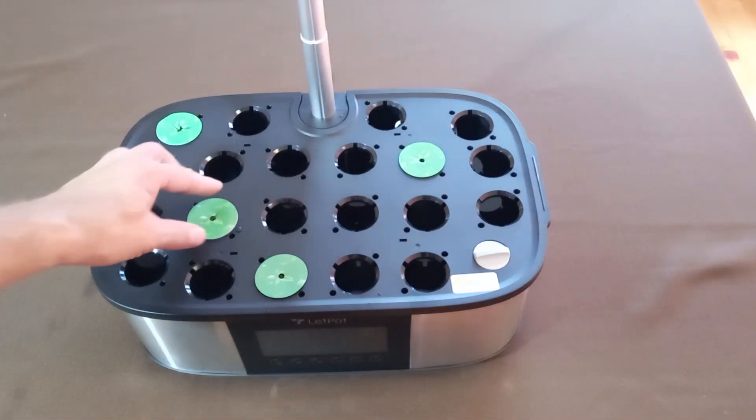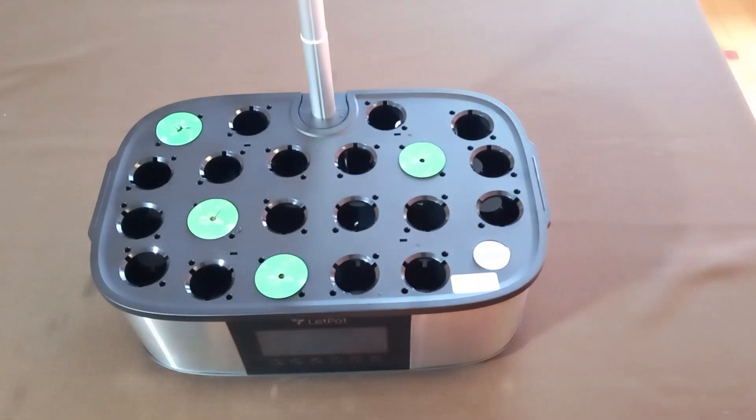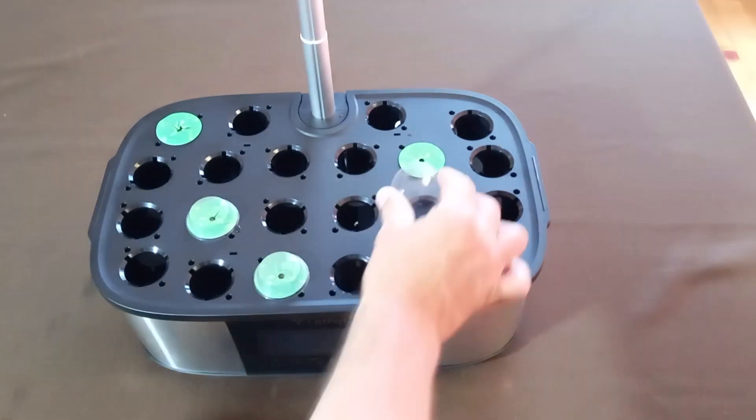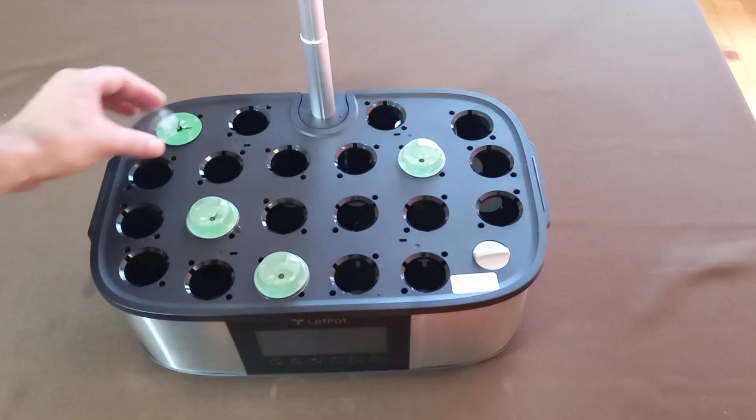Cover the seed pods with the provided grow domes. This will hasten the germination process of the seeds. Once you notice the seeds starting to sprout, you can remove the grow domes.